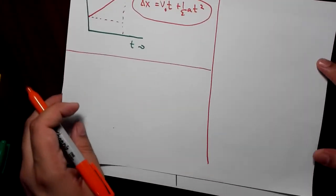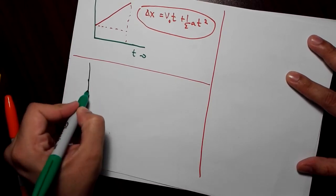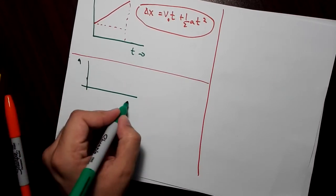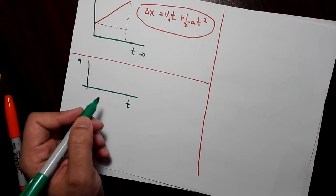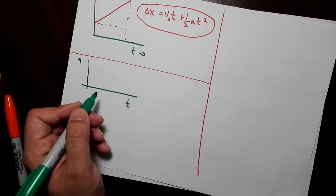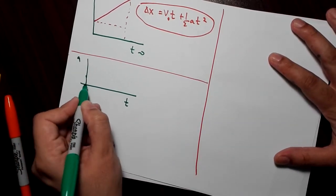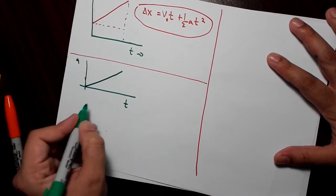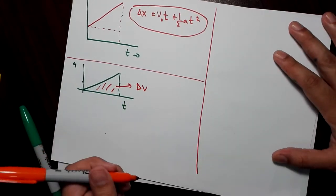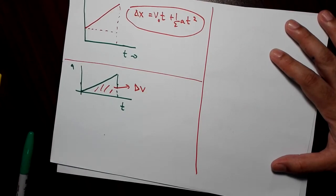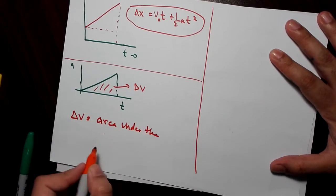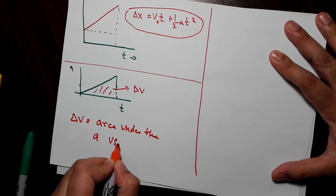Now for the acceleration versus time graph: the same idea applies. To get the change in velocity from an acceleration-time graph, you find the area under the curve. So delta v equals the area under the acceleration versus time graph.